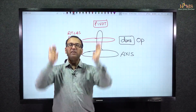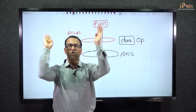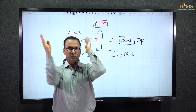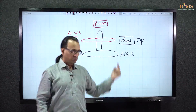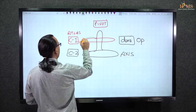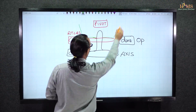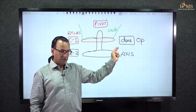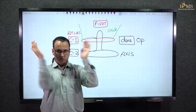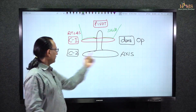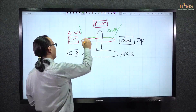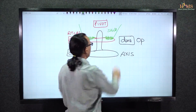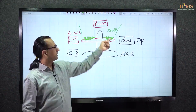It is the atlas that rotates on the axis, created by the dens of the axis. When the atlas rotates, the skull rotates along with it. So the skull and the atlas become one unit, and that one unit rotates on the C2 vertebra. This rotation on the axis is the basis of the atlanto-axial joint.